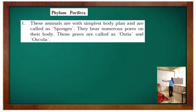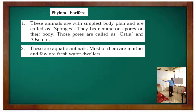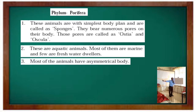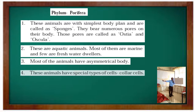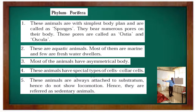First we will see phylum Porifera. These animals have the simplest body plan and are called sponges. They bear numerous pores on their body; those pores are called ostia and oscula. These are aquatic animals — most of them are marine and few are freshwater dwellers. Most of the animals have an asymmetrical body. These animals have special types of cells called collar cells and are always attached to a substratum, hence do not show locomotion and are referred to as sedentary animals.